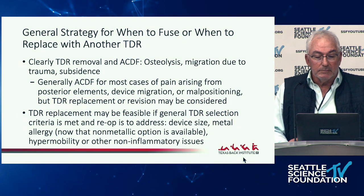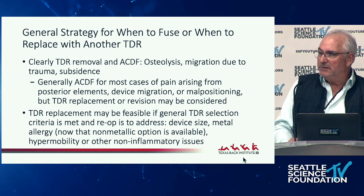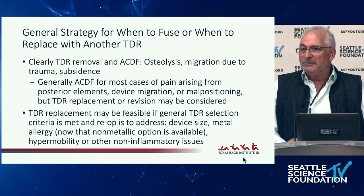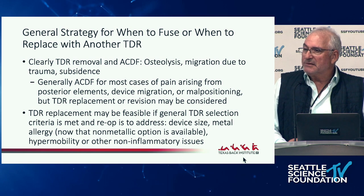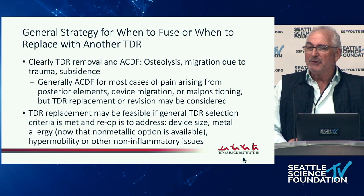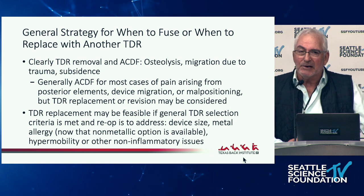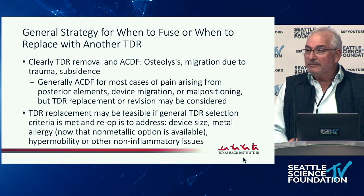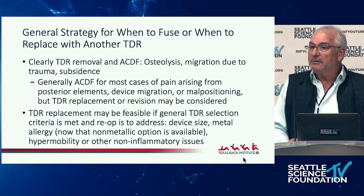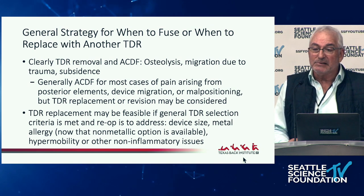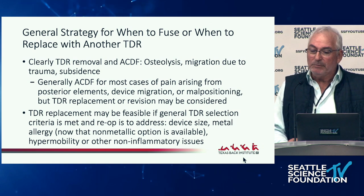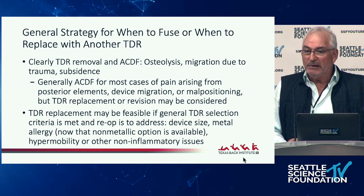General strategy: with osteolysis, I'm convinced conversion to ACDF rather than disc-to-disc is the right call. Curating out the cysts and creating mechanical stability is what cures these patients. We feel better giving six weeks of doxycycline, but I'm not sure that's truly a game-changer. If mechanical stability and good end plates can be preserved, disc-to-disc is very feasible — for hypermobility, disc migration, as long as you've got end plates, it's a really good salvage.